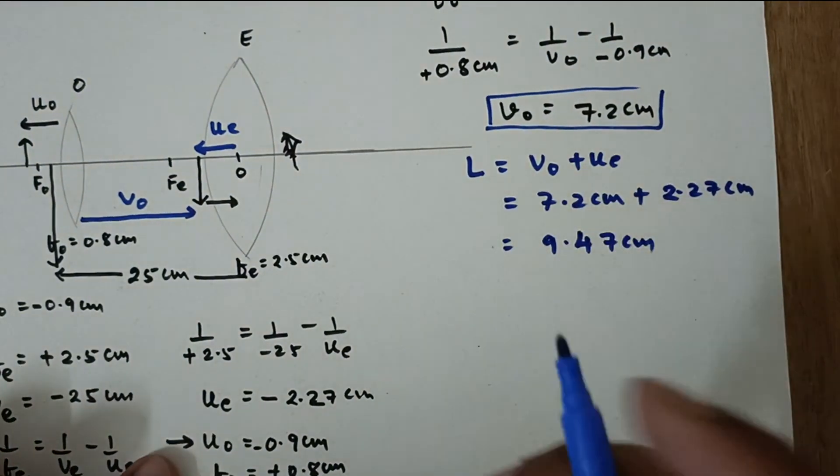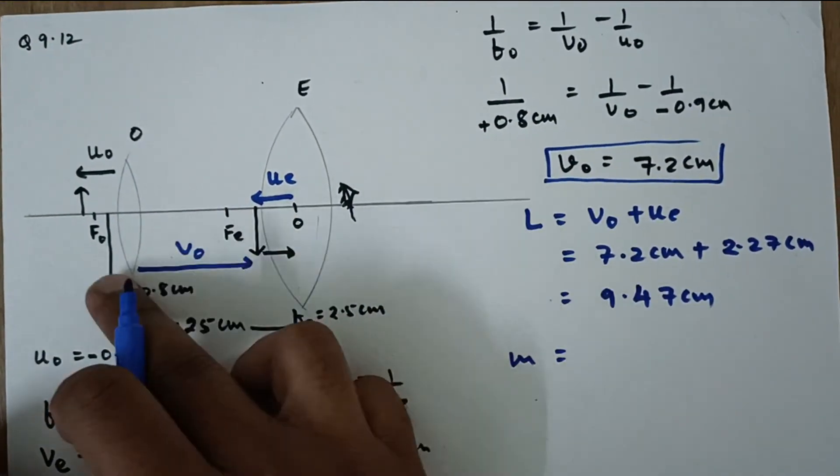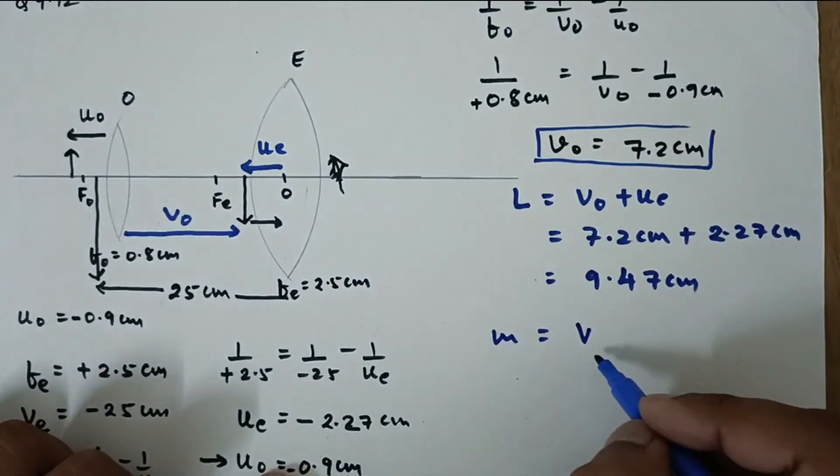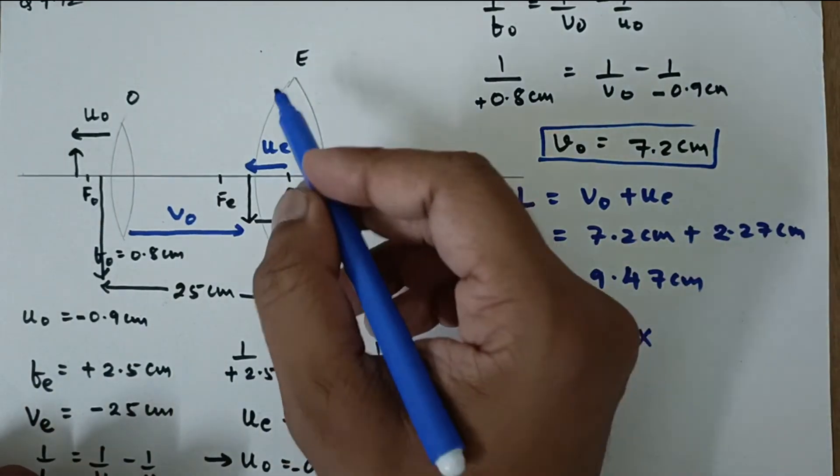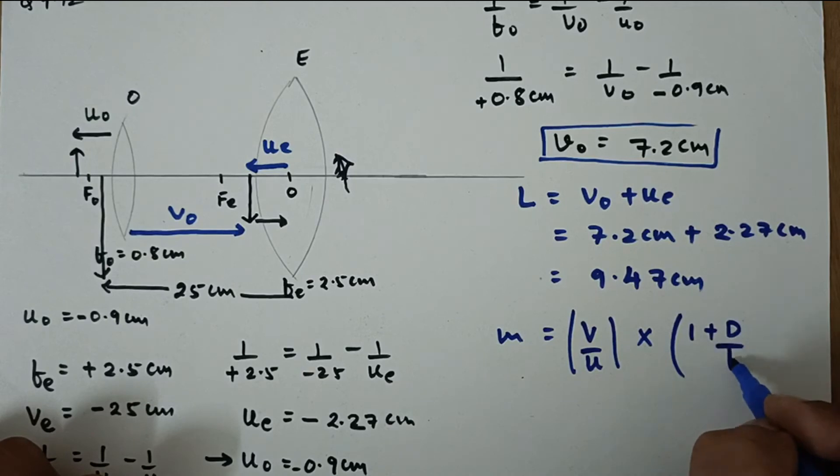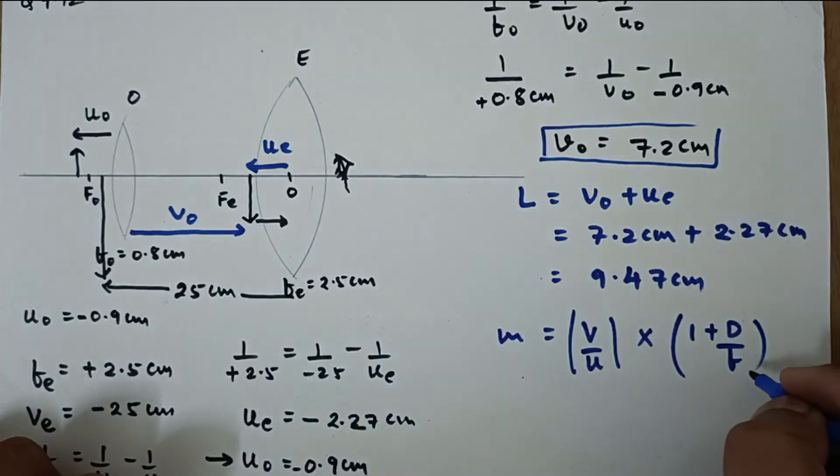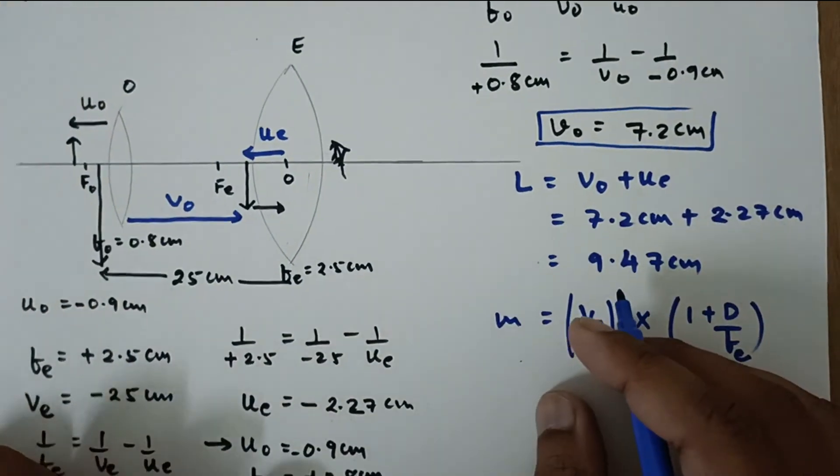Now we are also supposed to find the magnifying power which is the magnifying power multiplication of magnification of both of them. So that is V upon U times. Now since the final image for this lens is at 25 cm, 1 plus D by F. Please note this is the magnification for this lens. So it will be FE. This is for this one.